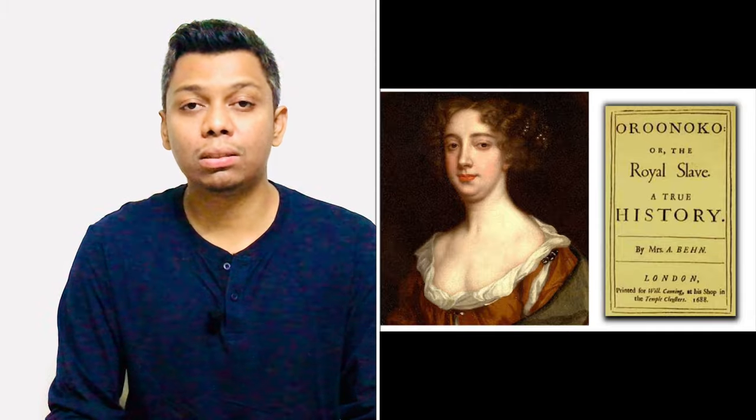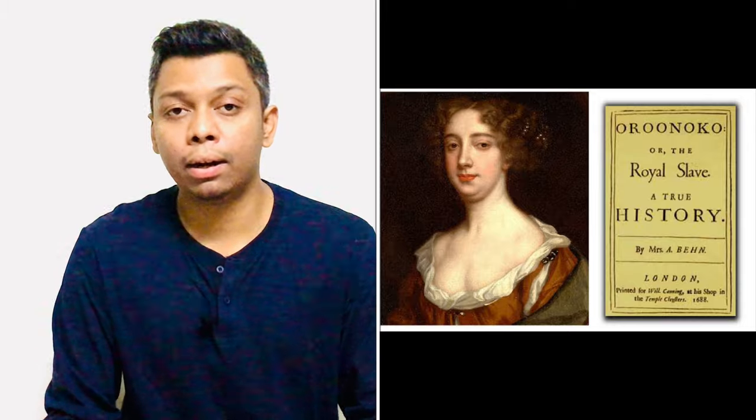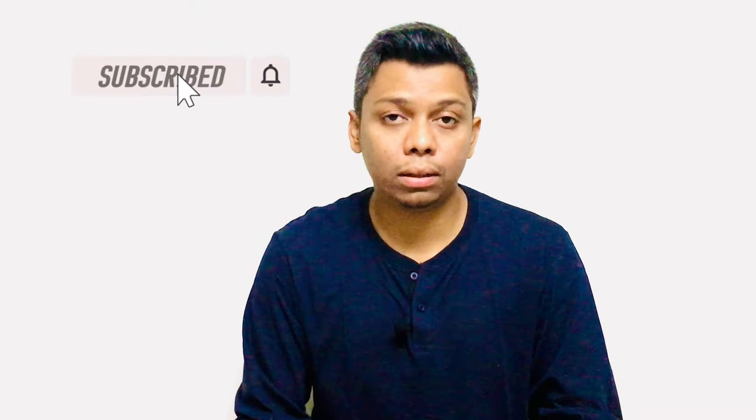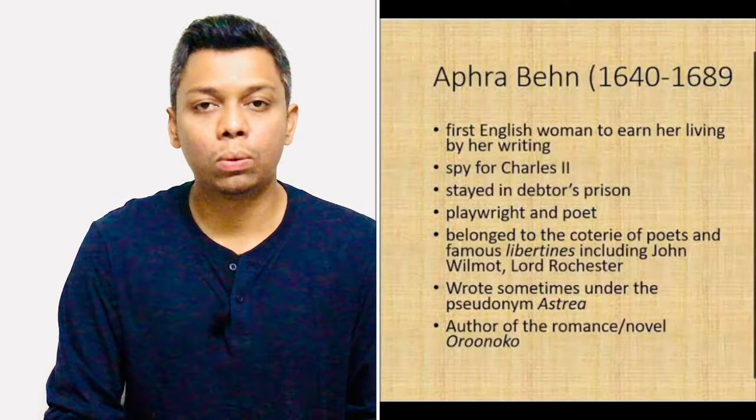Aphra Behn is also called the first professional woman writer in the history of English literature. Earlier, women were not allowed to perform in plays or to write. This continued into later generations — for example, George Eliot, whose real name was Mary Ann Evans, had to change her name to a male pen name. Nell Gwyn was the first professional actress, while Aphra Behn was the first professional woman writer.